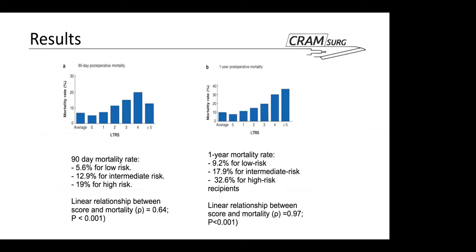In terms of 90-day mortality, there was a linear relationship between the score and mortality, and this was statistically significant. Patients with a low risk score had a 5.6% mortality rate; those with an intermediate risk score had 12.9%; and those with a high risk score had 19%. Similarly, for one-year mortality, results were statistically significant and showed a linear relationship between score and mortality.